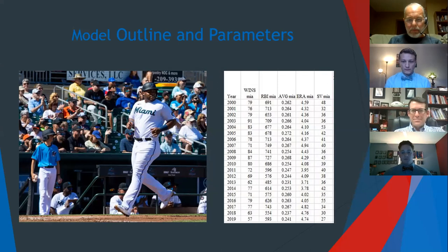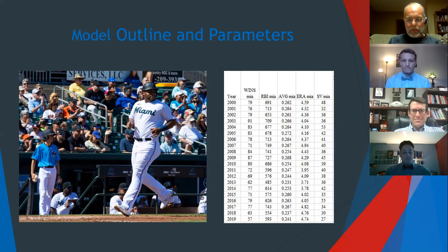I used a panel regression because I had five different teams in the division. A regular time series would have worked for one team, but with five teams I needed a model that takes all statistics into a single framework. Since all five teams have been in the division for a long time, there were no structural data problems. The time range is 2000 to 2019 — 20 years of data.